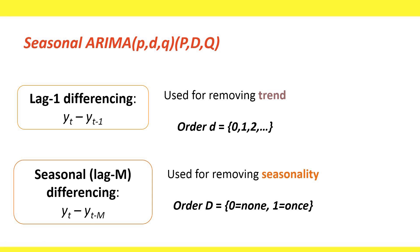For a cycle with m seasons, we use lag m differencing to remove seasonality. The parameter capital D denotes whether or not to perform seasonal differencing, where zero indicates no seasonal differencing, and one indicates applying seasonal differencing once.